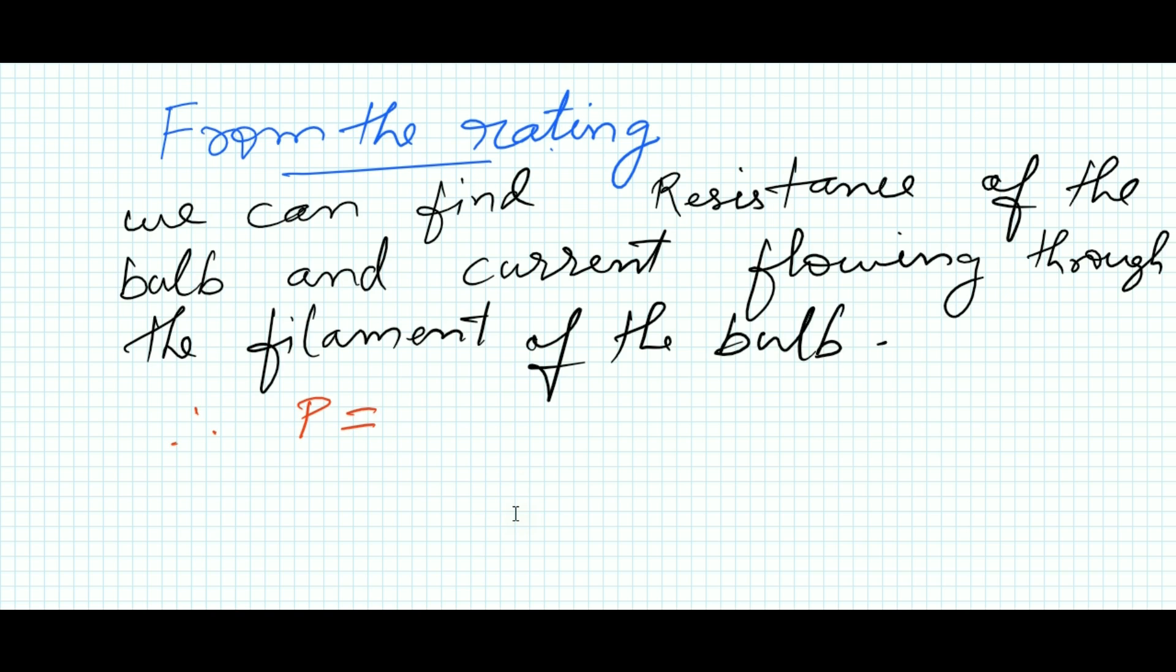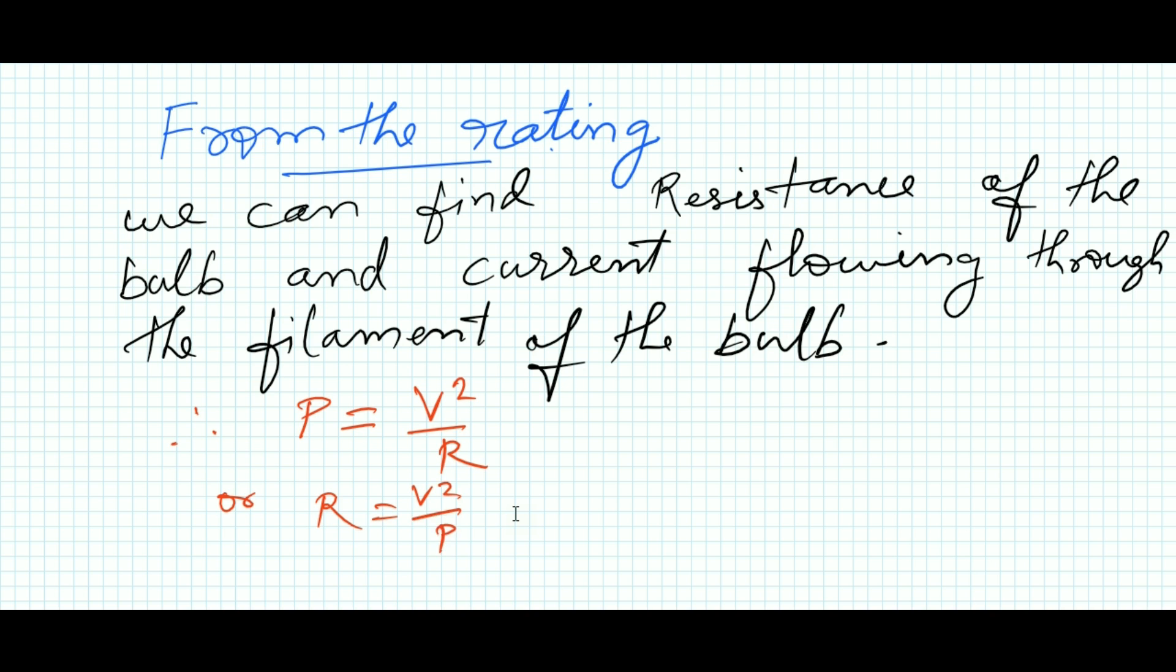We know the equation of power: P = V²/R, or R = V²/P. So here, 220² divided by 100, that is equal to 220 × 220 / 100. If we calculate this, then I will get the result equal to 484 ohms.